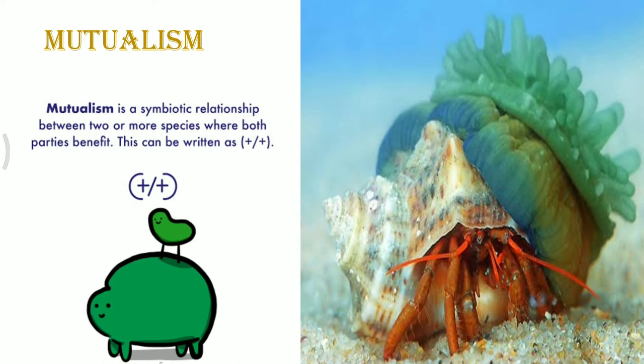The first time we came across the term symbiosis, it was given for lichens. A lichen consists of an alga and a fungus present in a mutualistic relationship, where each fungal hypha has intertwined algal cells within it. The fungus provides water, and the alga performs photosynthesis, providing food to the fungus. The alga cannot survive in dry conditions, but with the fungus it can survive because it gets a continuous supply of water and minerals. The fungus cannot make its own food but gets it with the help of the alga.